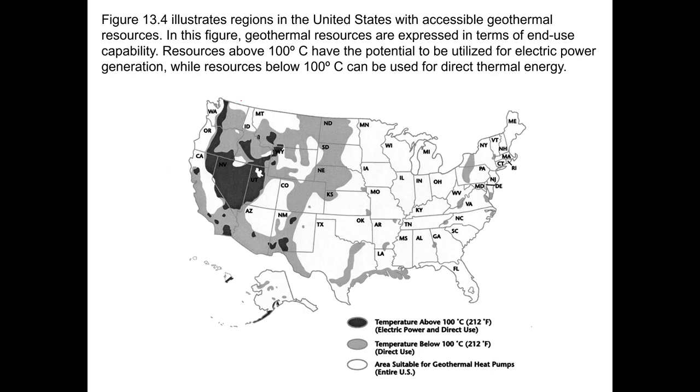As you can tell, this area of the U.S. has temperatures above 100°C for direct geothermal use. These areas in gray are below 100°C, and then everything else in white is just suitable for geothermal heat pumps.